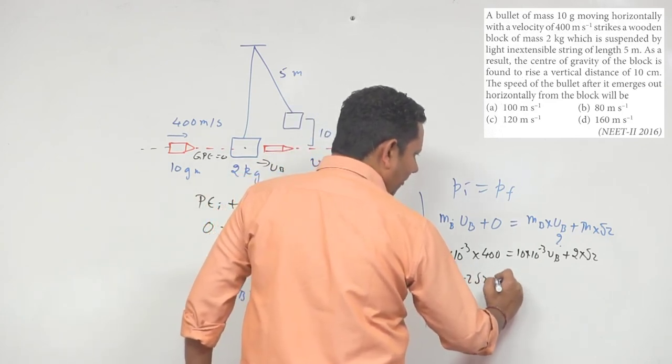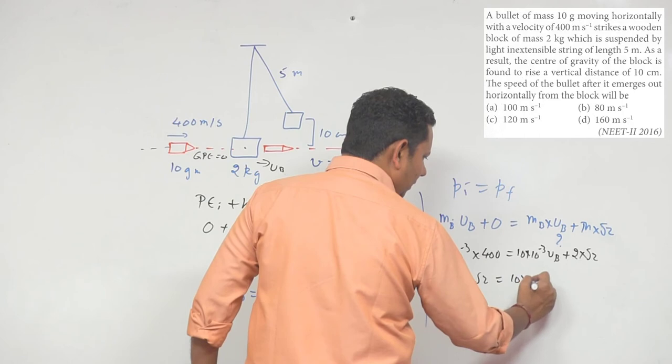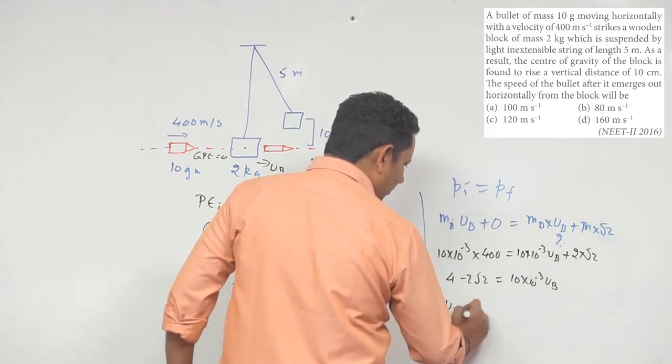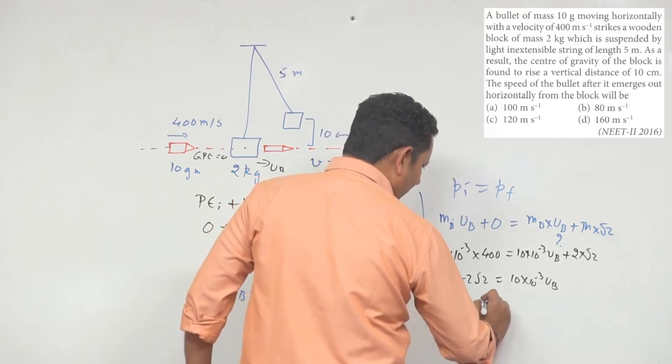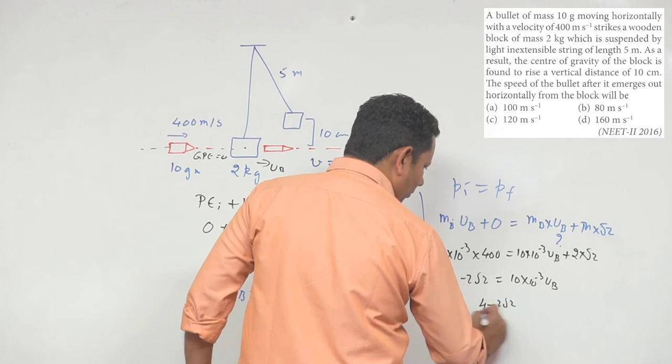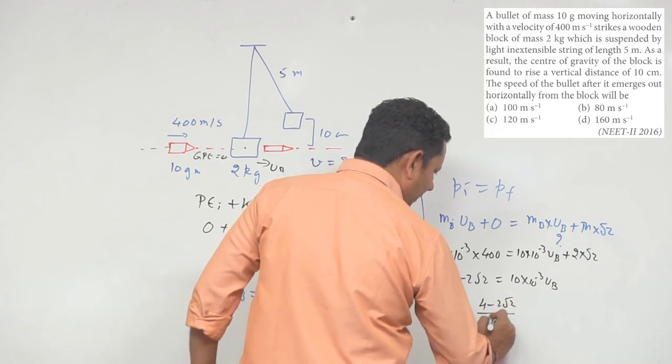Rearranging, velocity of bullet equals 4 minus 2 root 2 divided by 10 to the power minus 2. Let's calculate this to find the velocity of bullet.